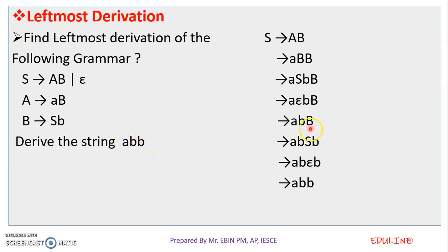Then we replace S, B. So S, B — we replace A, Epsilon, B, B. So A, B, B and then we replace A, B, B. So this is the leftmost derivation.